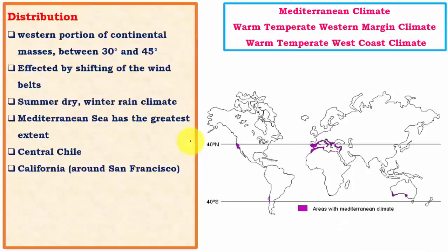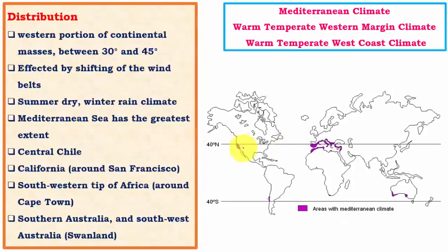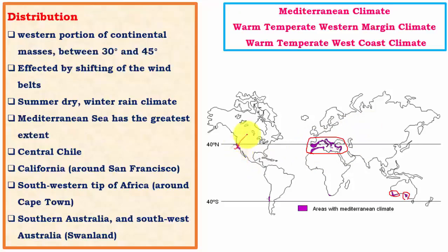The Mediterranean type of climate is mainly concentrated on the western side of continents. For example, we have Swanland and other regions on the western side of Australia, the Mediterranean region as the western part of the Eurasian landmass, parts of California on the western side of North America, and central Chile on the western side of South America. This climate is most well-noted in the Mediterranean region, hence the name.